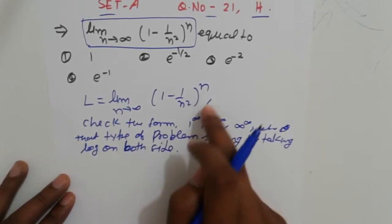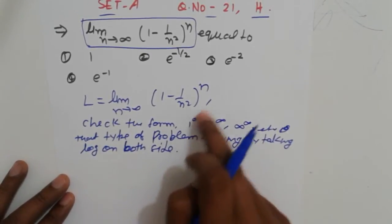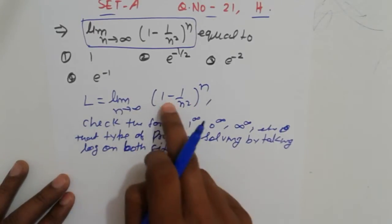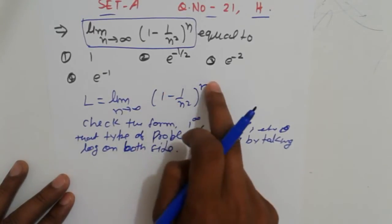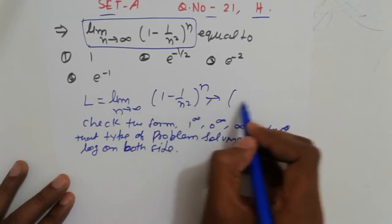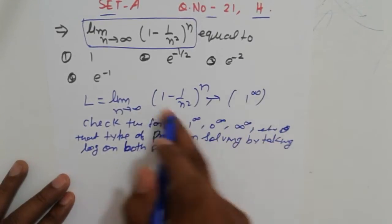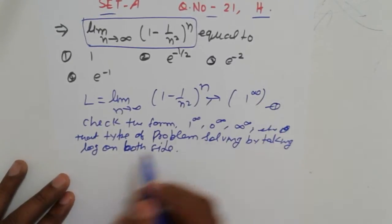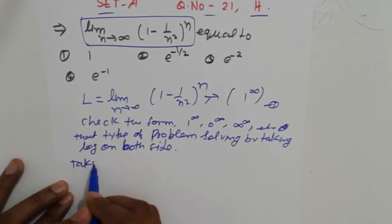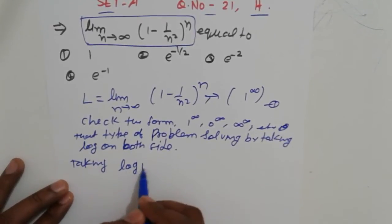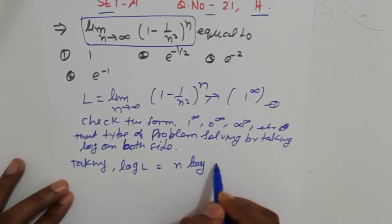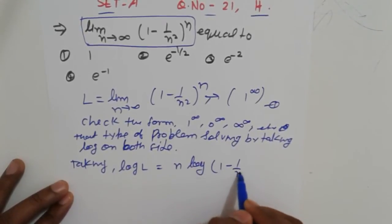When we have an indeterminate form like 1 raised to infinity, that type of problem is solved by taking log on both sides. When we put the limits, we get 1 raised to infinity. So log L equals limit n tending to infinity, n log(1 - 1/n²).